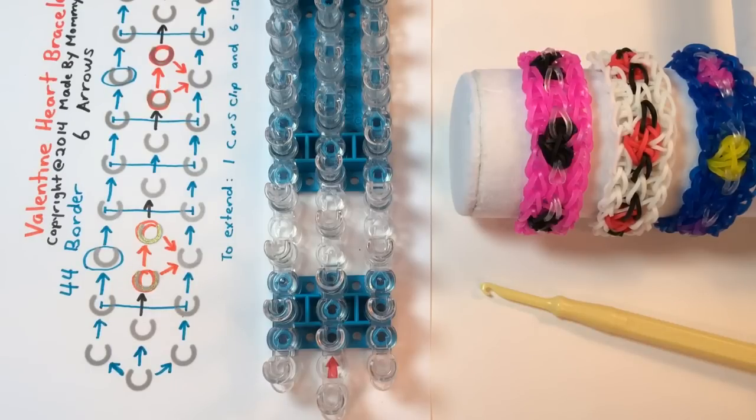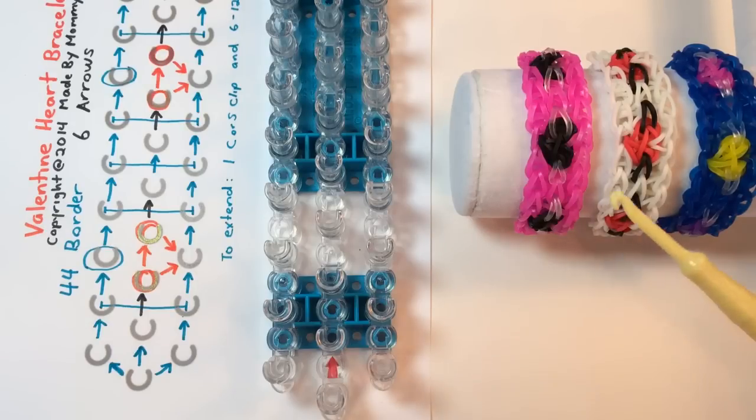To make this bracelet, you're going to need about 80 rubber bands total, a loom in a staggered configuration, and your hook. To begin, you want to pick three colors. You will need about 44 rubber bands in the color that you want your border to be.